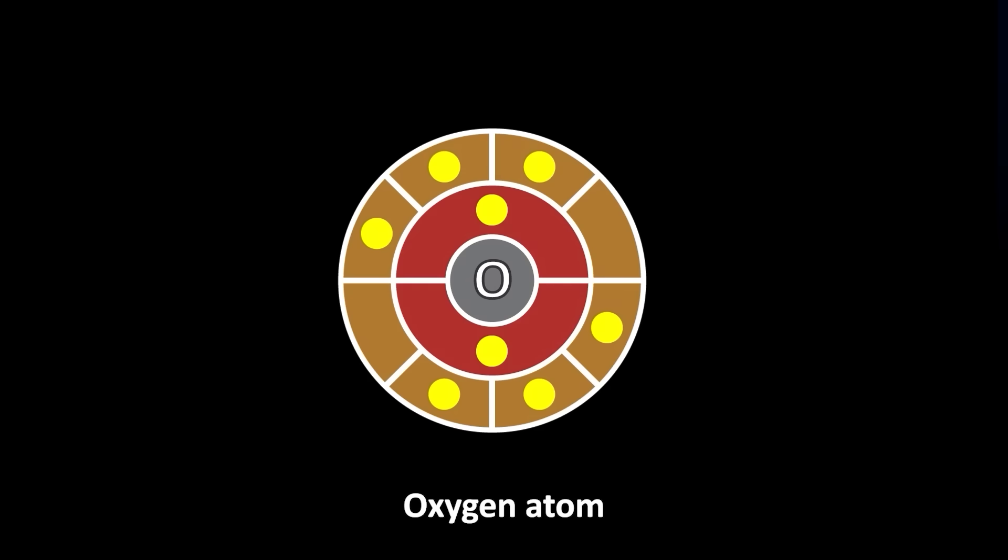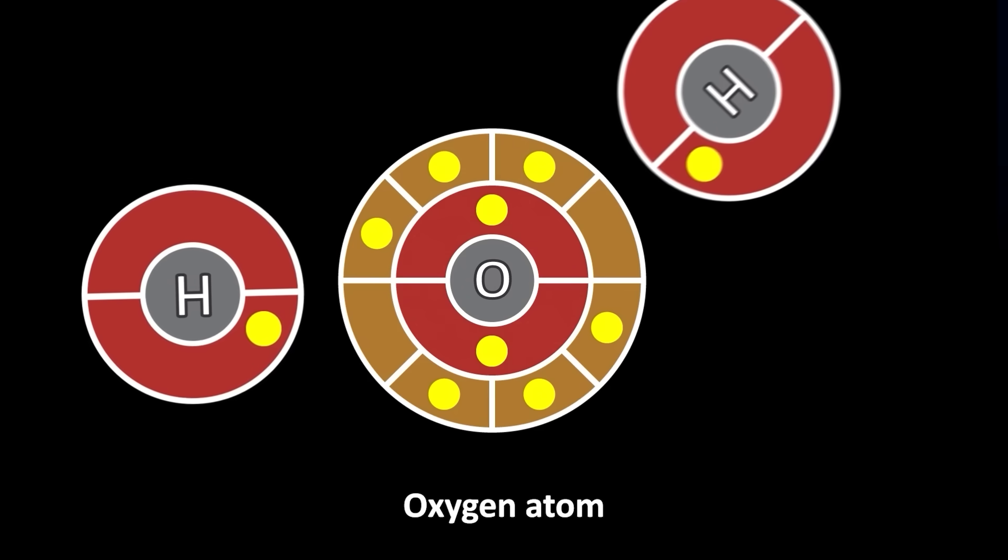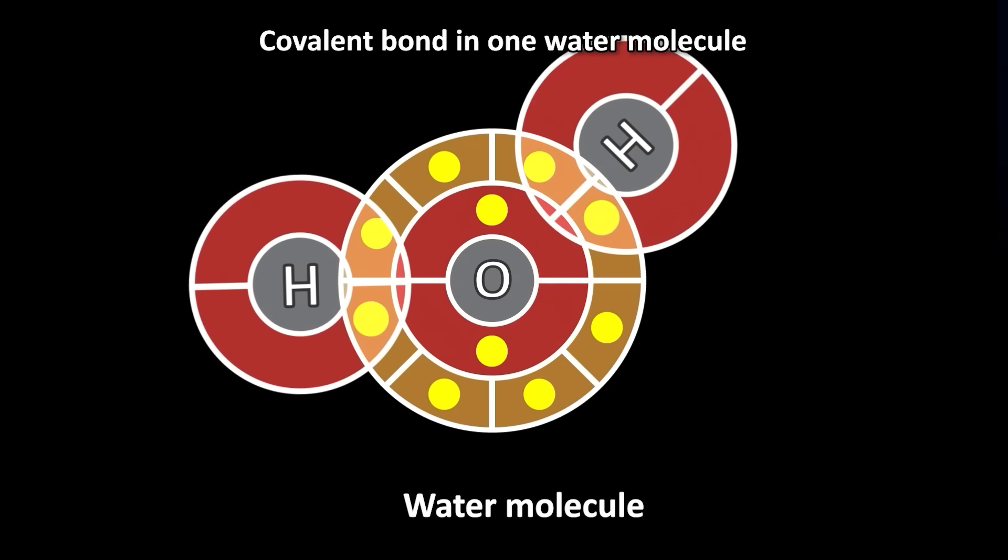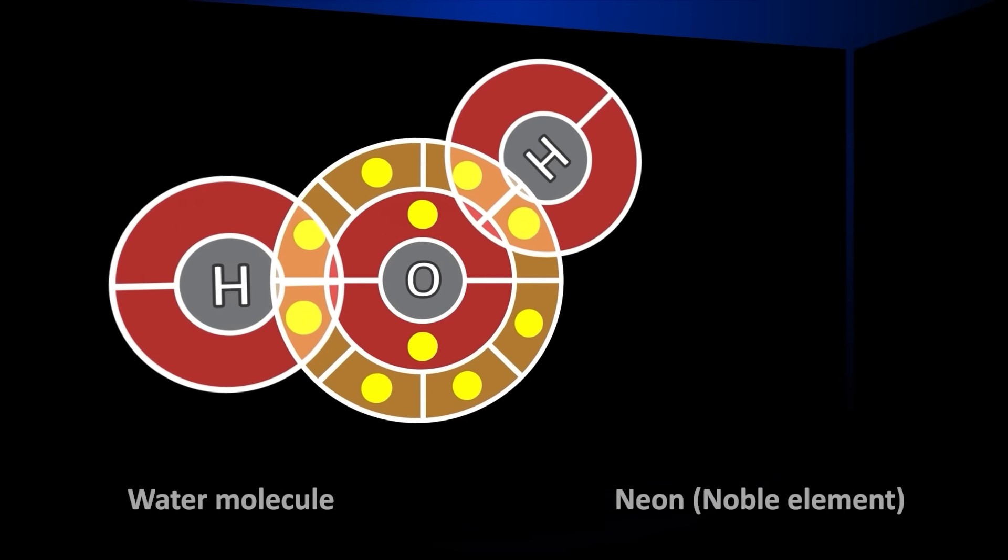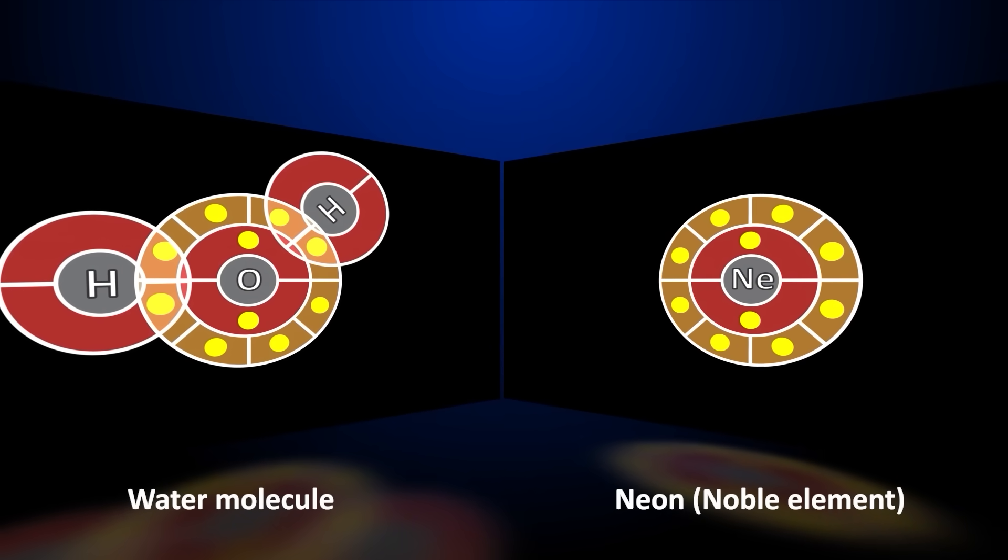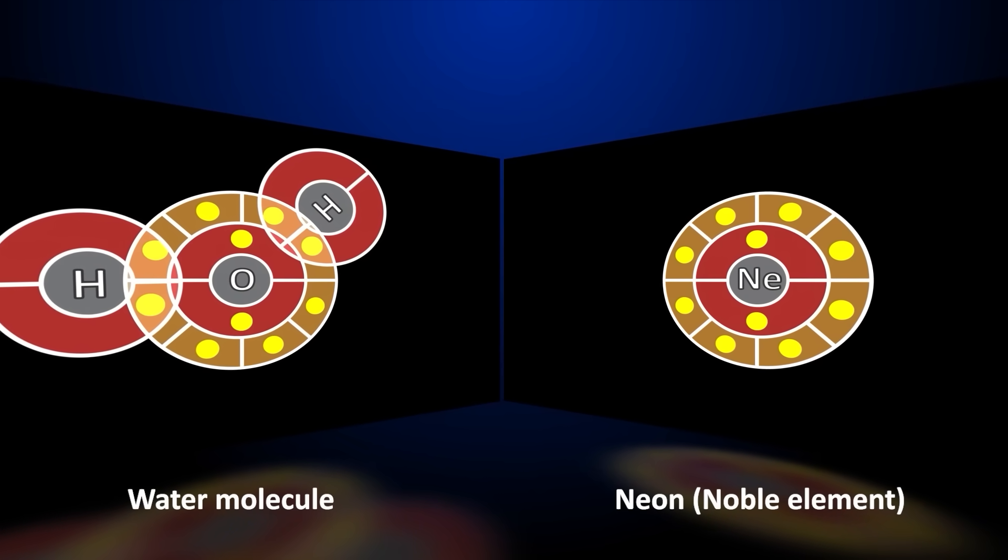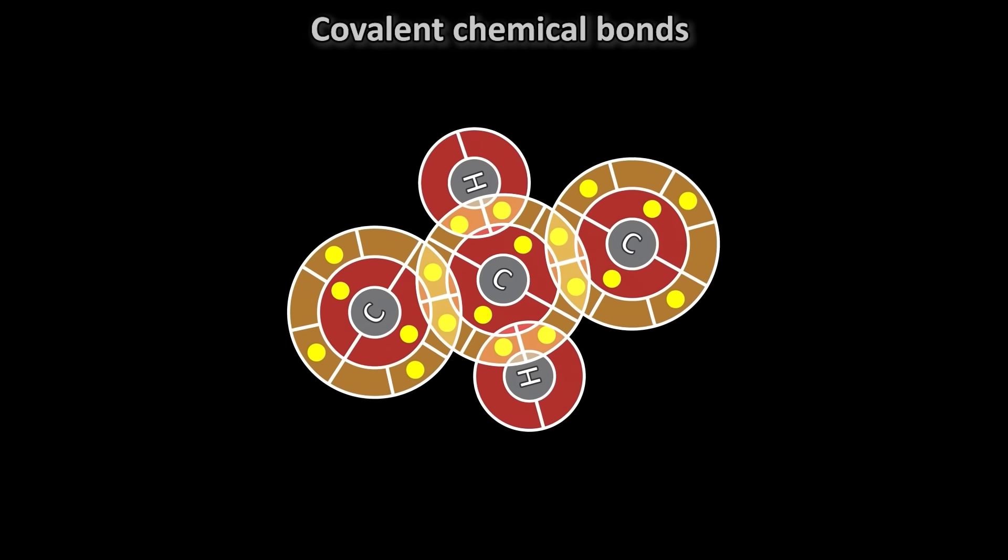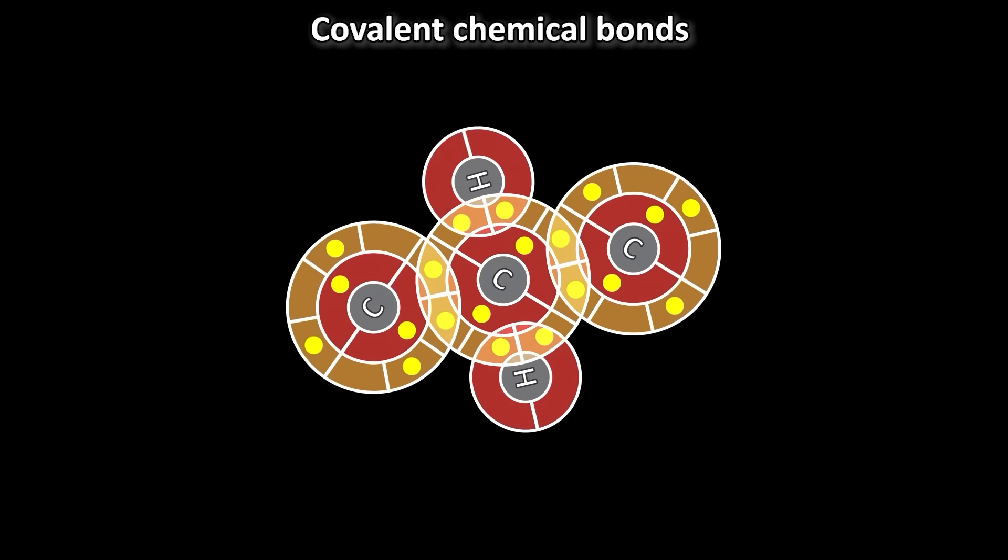The driving force behind chemistry is really a hunt to get to the most energetically efficient state in a system, the state of lowest energy. For the most part this lowest energy state occurs when an atom is able to fill its outermost shell fully, like the noble elements. Some atoms can do this by sharing their electrons with other atoms to form covalent chemical bonds.